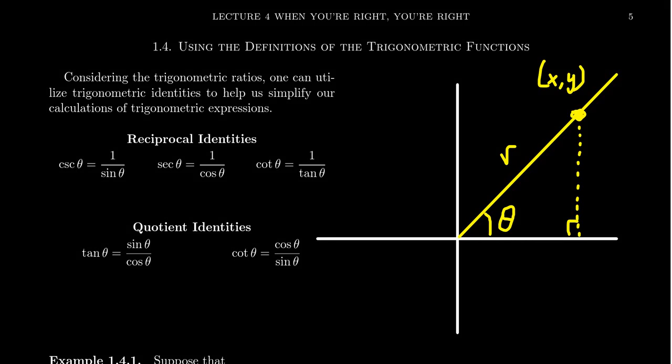So I recall from a previous video that we defined the six trigonometric ratios — sine, cosine, tangent, cosecant, secant, and cotangent — of an angle theta with respect to any terminal point, any point on the terminal side.